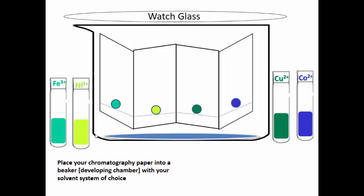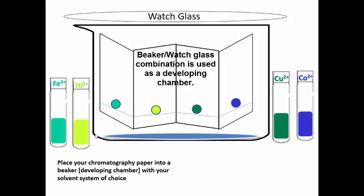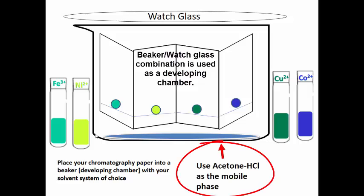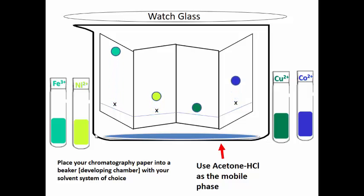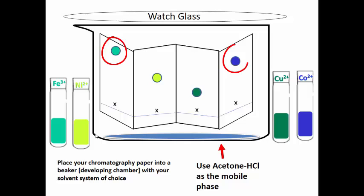Now it's time to develop it. I have a beaker and a watch glass — that's my developing chamber. I'm going to use my acetone/HCl solvent mixture as the mobile phase, which is going to drag the compounds up the paper through capillary action or wicking action. Notice the iron moved really quickly, and then the cobalt moved really quickly, but the copper and the nickel did not.